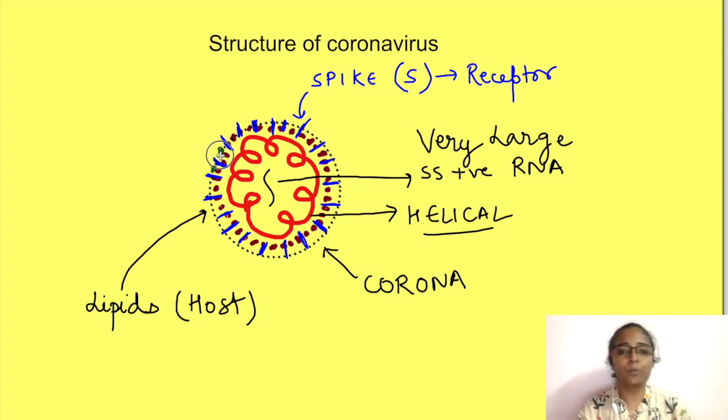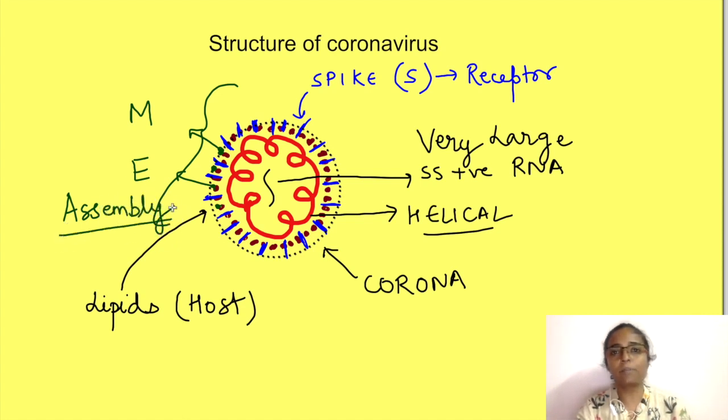There are two other proteins. One is known as membrane protein, M protein, which gives the virus envelope its shape while the other is E protein, i.e., envelope protein. Both of these proteins are said to have roles in the assembly of the virus genome, capsid and the envelope. So it brings all the components of the virus together as the virus leaves the host cell. In this video, we discussed the basic structure of viruses in general and of coronavirus in particular.